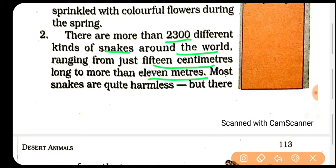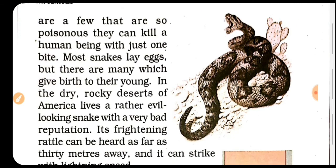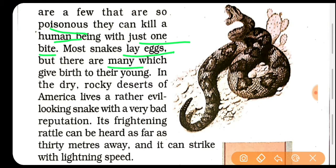Most jo snakes hain woh quite harmless hain — nuksaan na karne wale hain, woh humein nuksaan nahi pahunchate. But there are a few that are so poisonous — kuch itne poisonous hote hain, zehrile hote hain — that they can kill a human being with a single bite. Kuch snakes jo hain woh lay eggs — dete hain. But there are many jo give birth to their young ones directly.